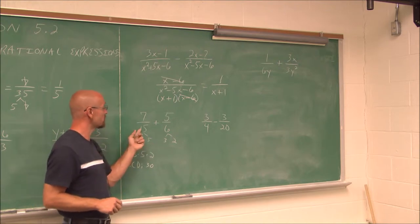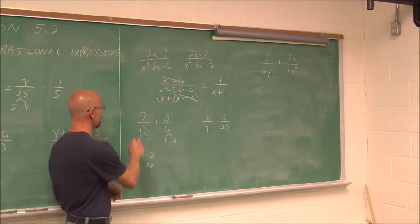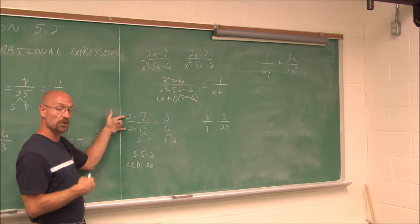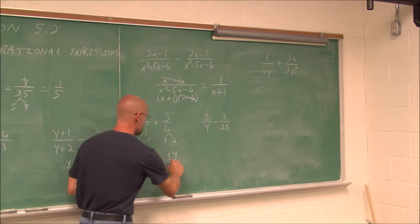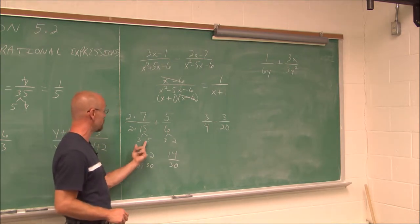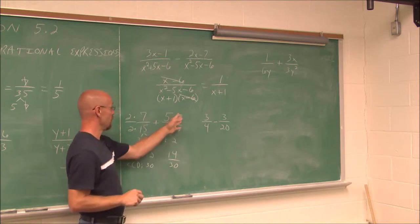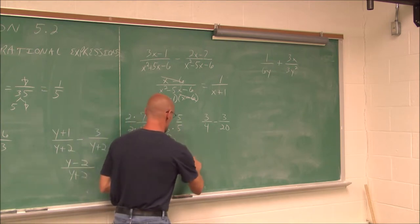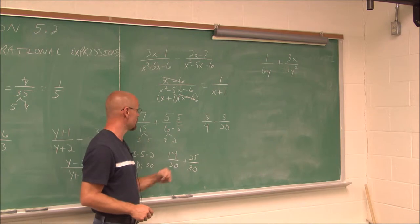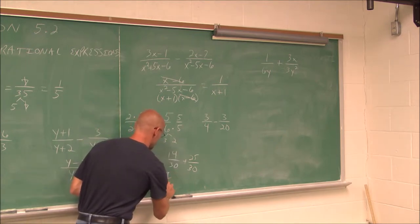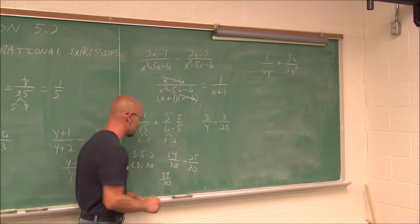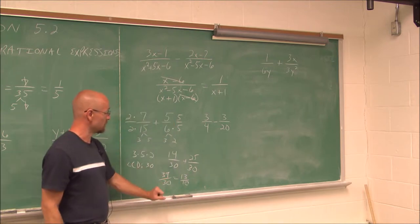Now we can build equivalent fractions. The first fraction was missing a factor of 2, so we multiply top and bottom by 2 — a fancy form of 1 — giving 14 over 30. The second fraction was missing a factor of 5, so we multiply top and bottom by 5, giving 25 over 30. Now we're ready to add: 14 plus 25 is 39 over 30. Simplifying: they're both divisible by 3, giving 13 tenths, which doesn't reduce further.